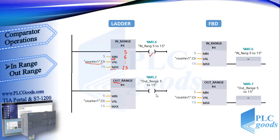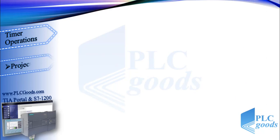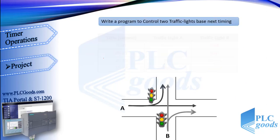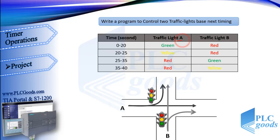Now let's do a simple project. Here we have two streets, A and B. I want to write a simple program to control two traffic lights. When I press a start push button, street A must be open for 20 seconds.